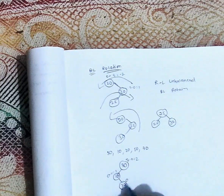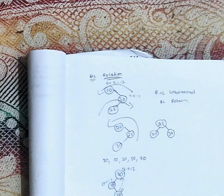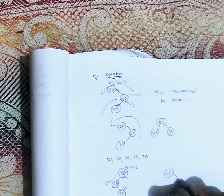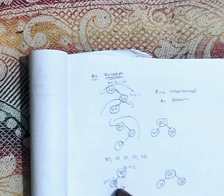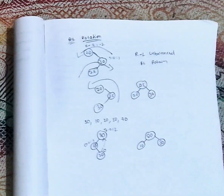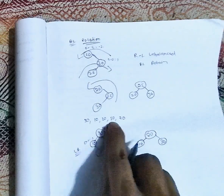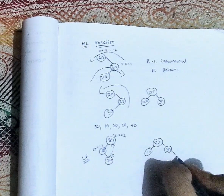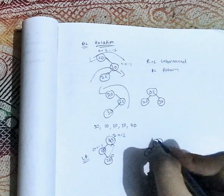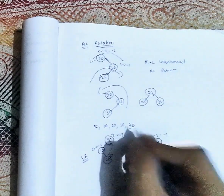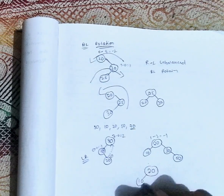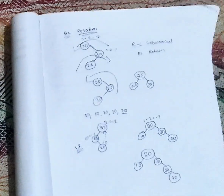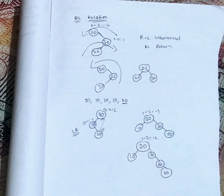For LR rotation, we take the last element as root: 20 becomes the root, 30 goes to the right, and 10 goes to the left. Now insert 50 — it is greater than 20 and greater than 30, so it goes to the right side of 30. The balance factor of 20 is left side 1, right side 2, so minus 1 — that is fine. Next we insert 70.